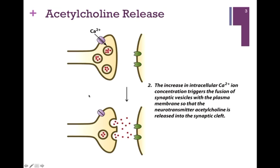Remember, the vesicles are simply lipid bilayers — sacs of lipid bilayers — and the plasma membrane is also a lipid bilayer. So if we bring those two surfaces together, those lipids will readily associate with one another. It's as if we've turned that vesicle inside out and thereby released the acetylcholine into the synaptic cleft.